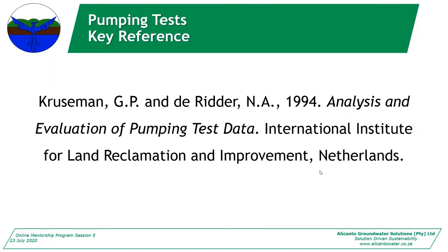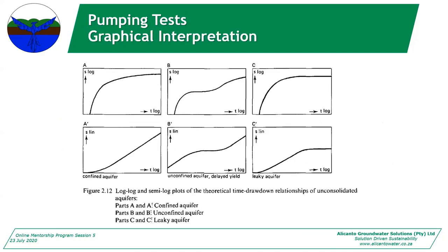The book by Kruseman and De Ridder, 'Analysis and Evaluation of Pumping Test Data' — mine is the 1994 version — is my go-to reference whenever I do a pump test. I recommend getting hold of this book; Google it, ask the library, make photocopies. When you do your graphs, you plot your drawdown data versus time first on a log-log graph and then on a semi-log graph. The shapes tell you what type of aquifer system you're in: a confined aquifer flattens out over time, an unconfined aquifer has a different shape, and a leaky aquifer has an initial drop then flattens.